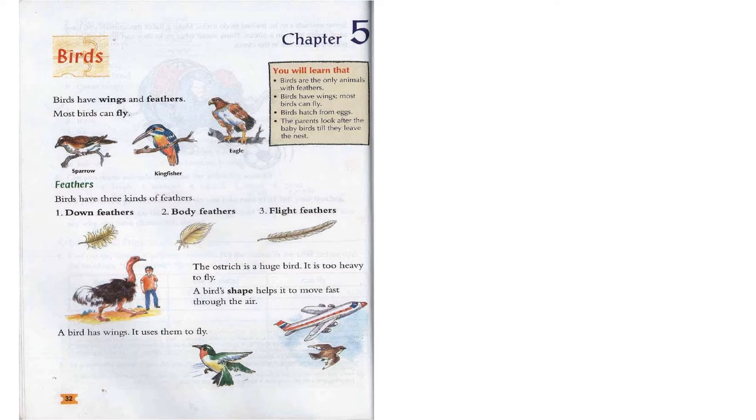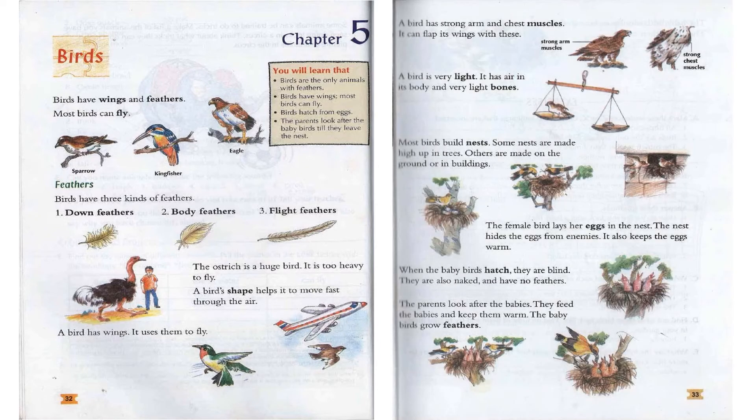A bird has wings and it uses them to fly. Moving to page 33, a bird has strong arm and chest muscles, and it can flap its wings with these. If you look at the picture on the right you can see the bird has strong arms — known as wings — and chest muscles, which help the wings to flap and let them fly quite fast.